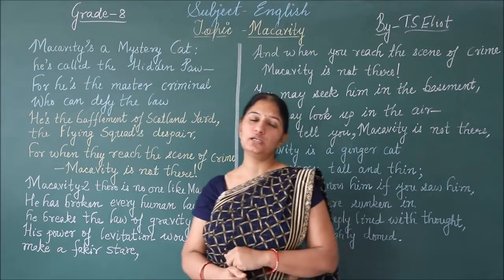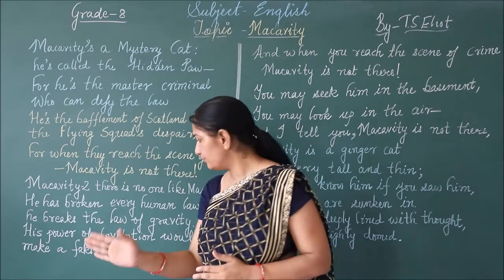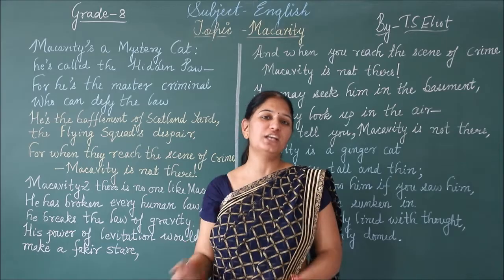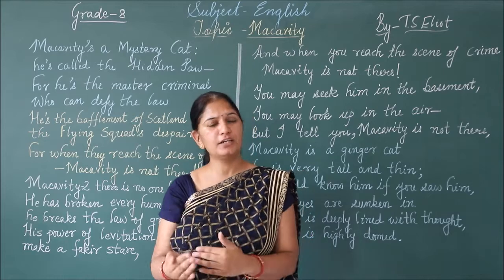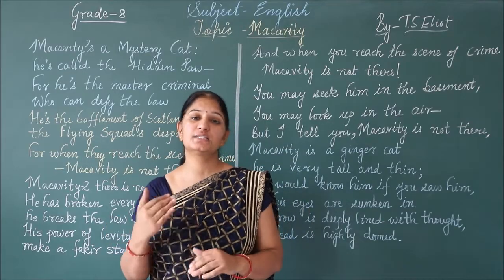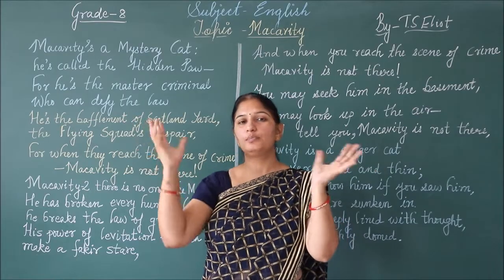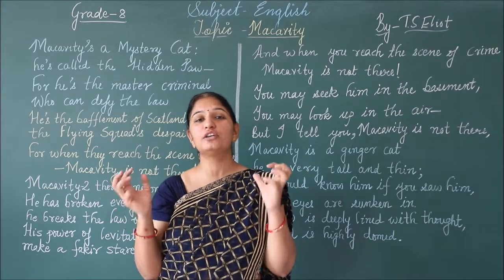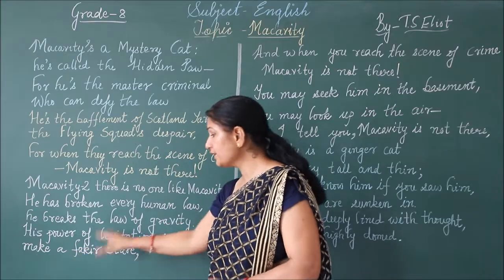He has broken every human law. McCavity is so strong that he has broken every human law — even the law of gravity. Breaking the law of gravity means he disappears very soon, within a fraction of seconds. It is believed that he is not affected by the gravitational pull. His power of levitation would make a fakir stare. Levitation means to rise up in the air through some magical powers — it is believed he has such powers through which he disappears very soon.